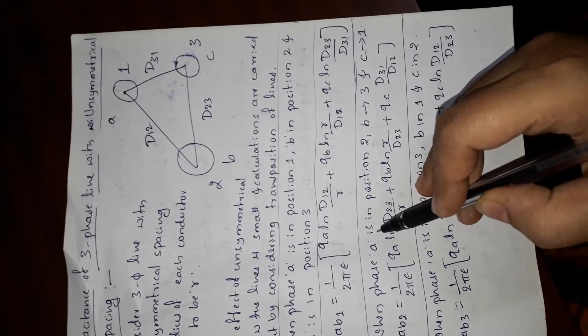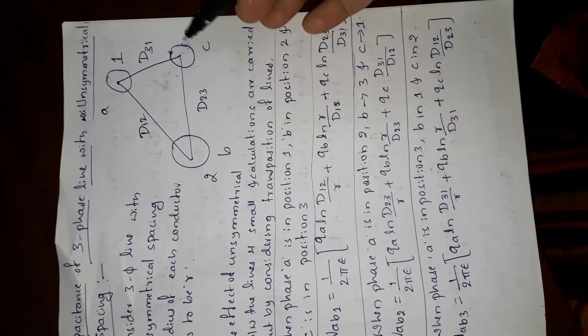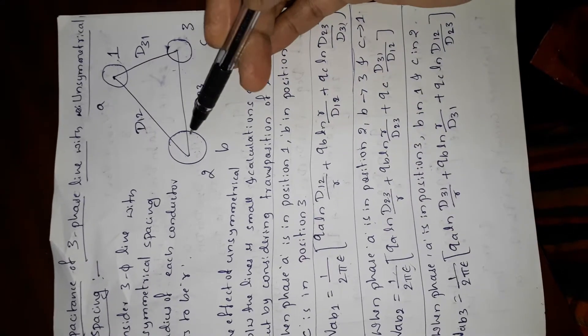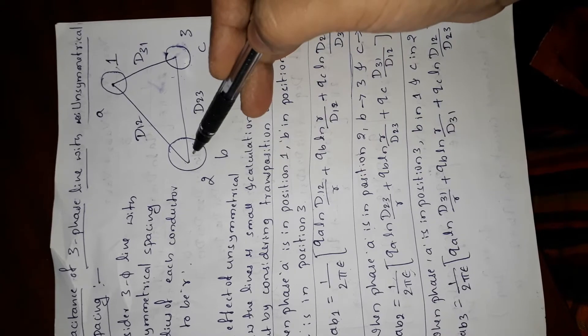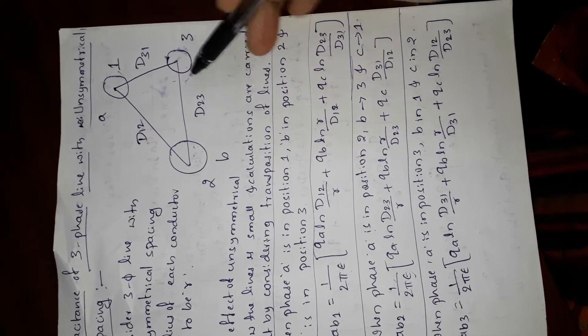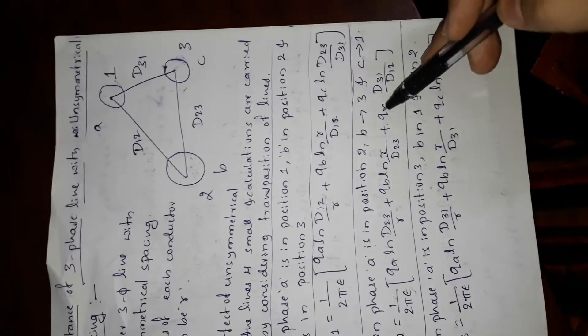When conductor a is shifted to the second position, then b is at the third position and c is at the first position. The common factor is 1/(2πε). For qa at the second position, the distance is d23 divided by r, plus qb in reverse order, plus qc.